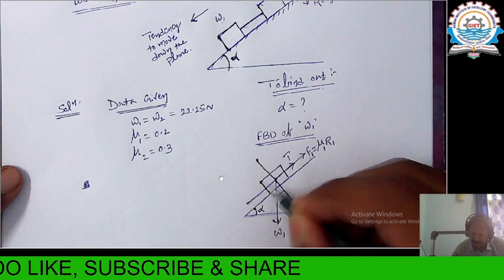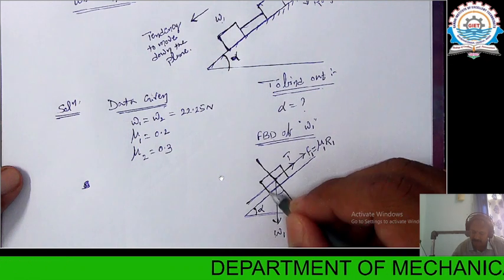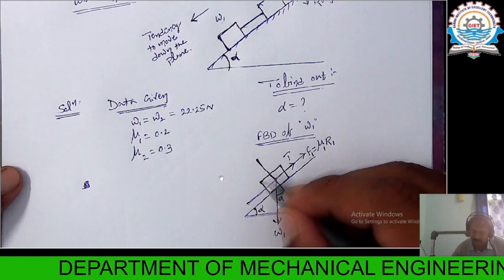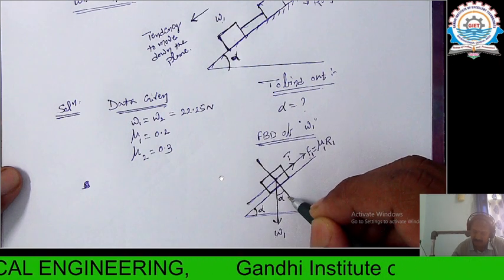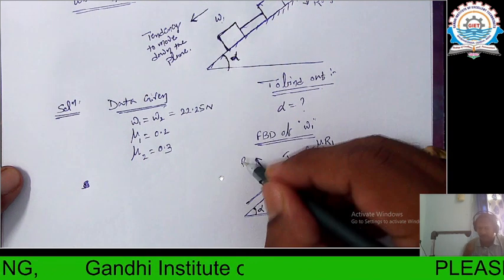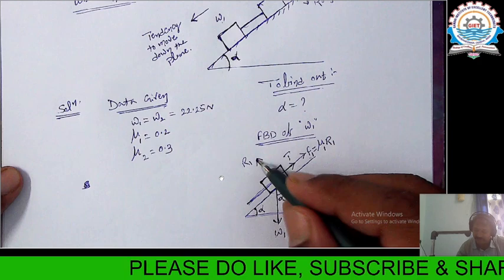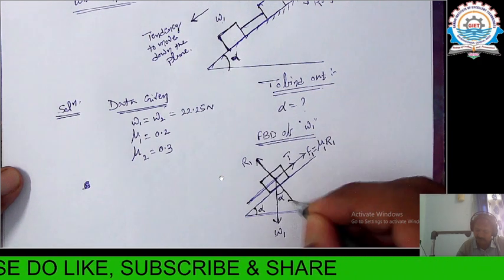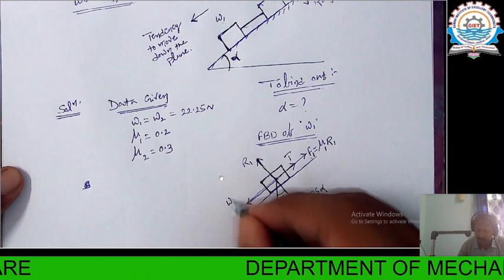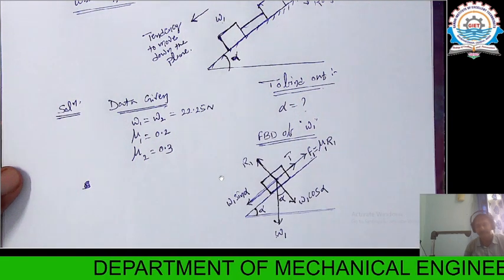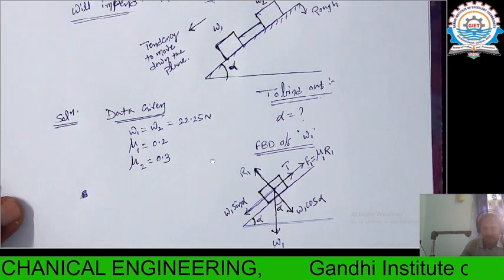The direction of the reaction is opposite to the direction in which the body cannot move, so this is R1. Taking the horizontal and vertical planes, we resolve W1 into two components: W1 cos alpha (perpendicular to the plane) and W1 sin alpha (along the plane). These are all the forces shown in the free body diagram of W1.